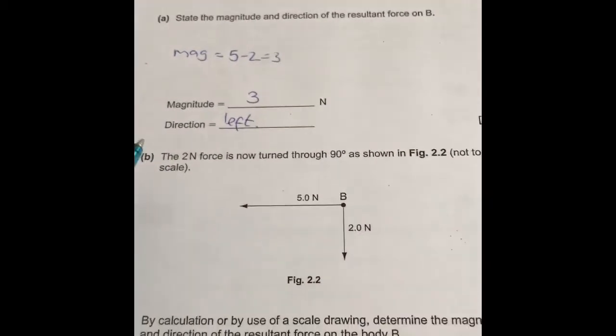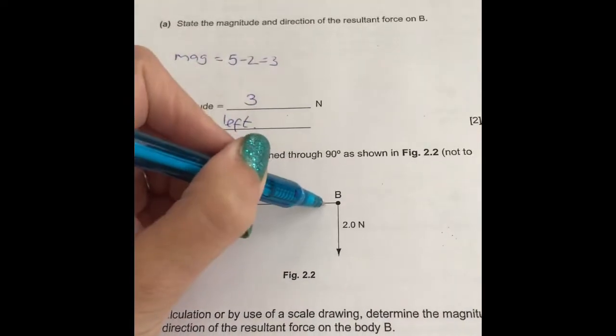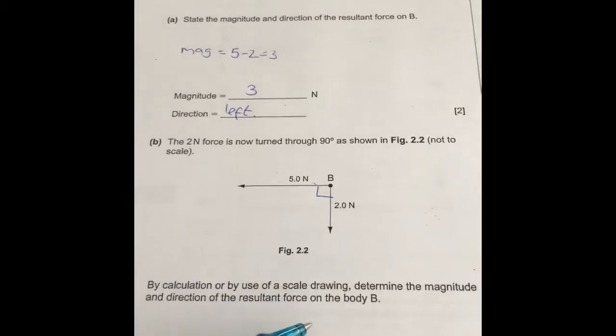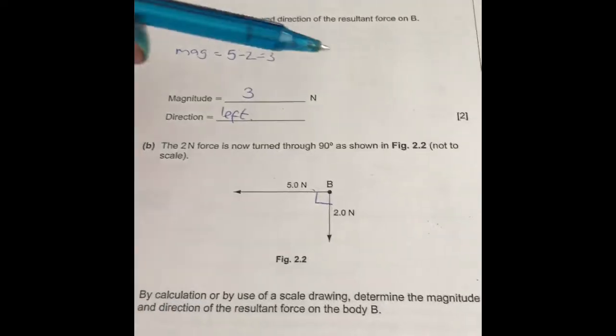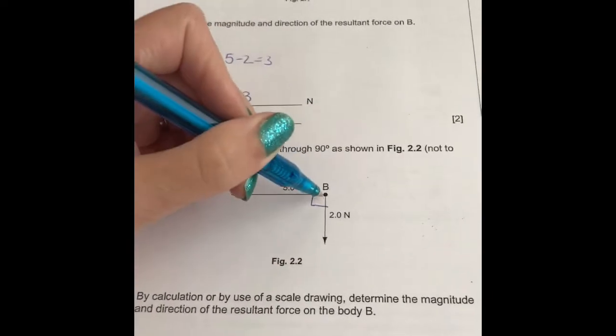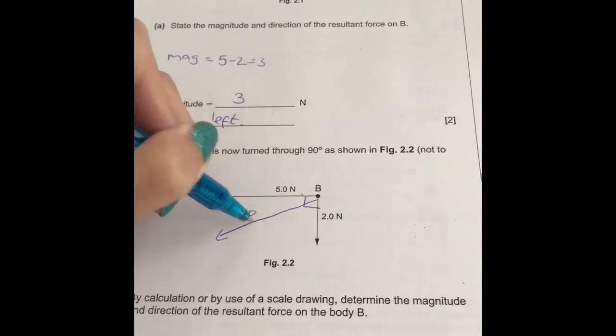Now it gives us the 2 newton force turned at 90 degrees, and they want us to define by calculation or scale drawing, determine the magnitude, the size, and the direction of the resulting force. So we know here the body's being pulled to the left and down, so it is really going to be moving this way here. That is my resultant force.